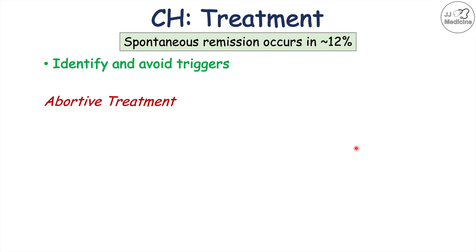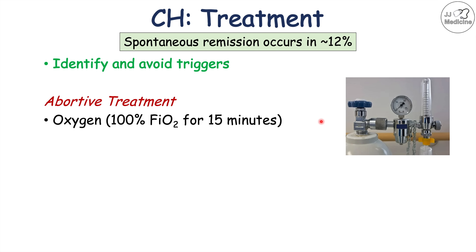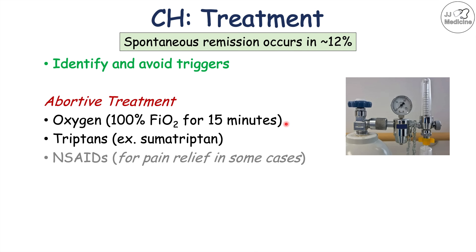Abortive treatments help stop the headache when it occurs. One important treatment is 100% oxygen for 15 minutes, which helps resolve the headache in many cases — an important testing point. Triptans, such as sumatriptan, which are also used for migraines, can be used as well. NSAIDs like ibuprofen can also be used for pain relief.